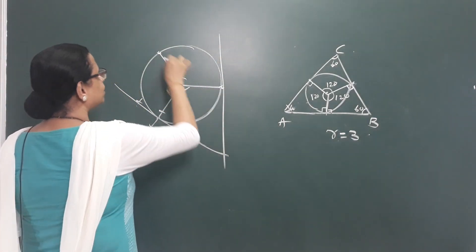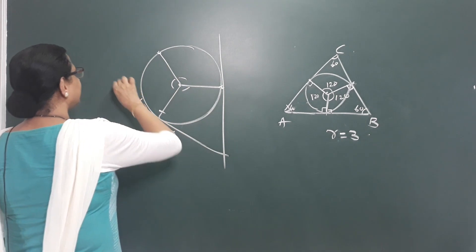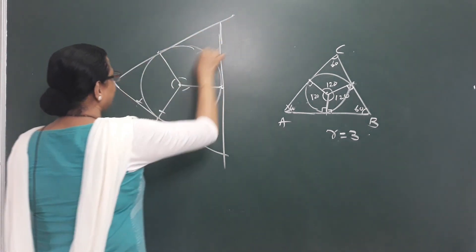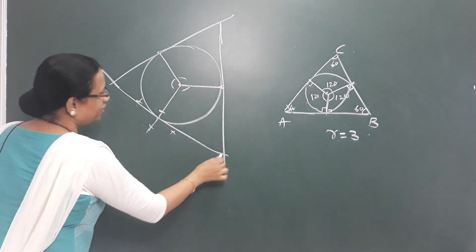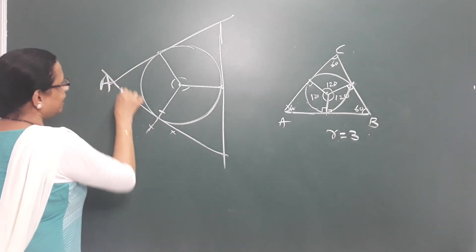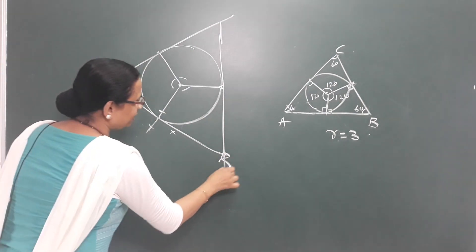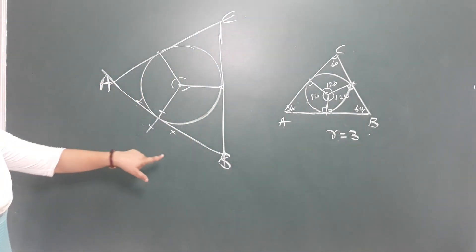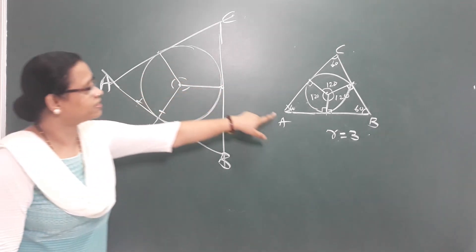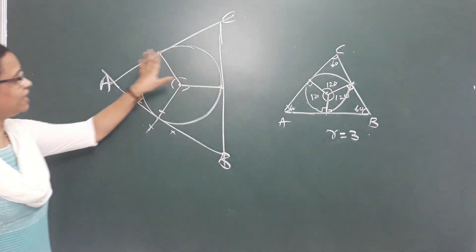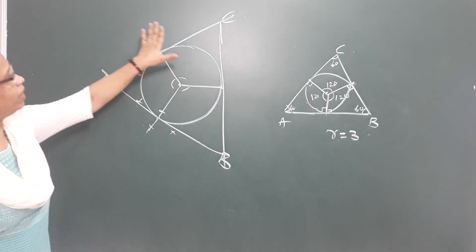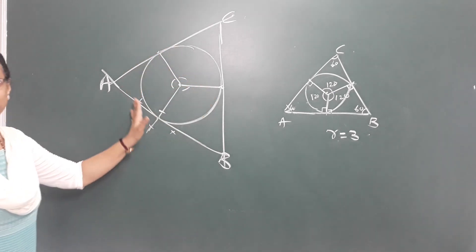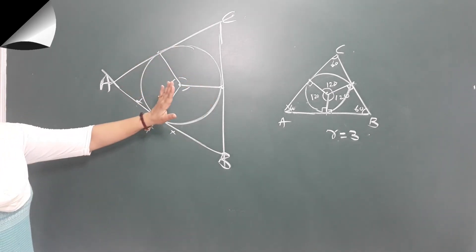At each point, we make a perpendicular to form the tangent. We label the vertices A, B, and C. This is the triangle ABC, which is a circle with the inscribed equilateral triangle formed by the tangent lines.